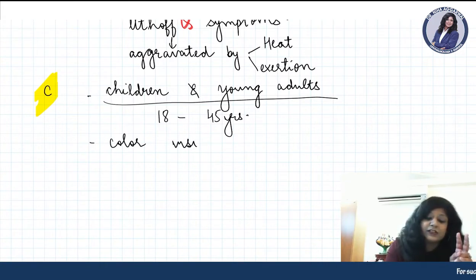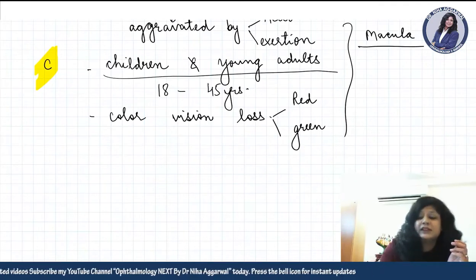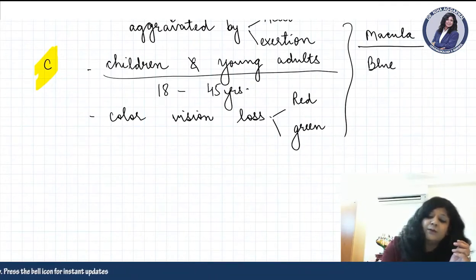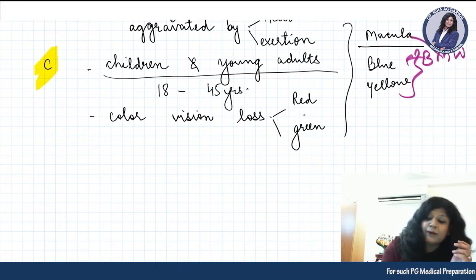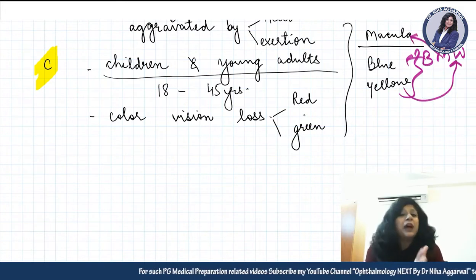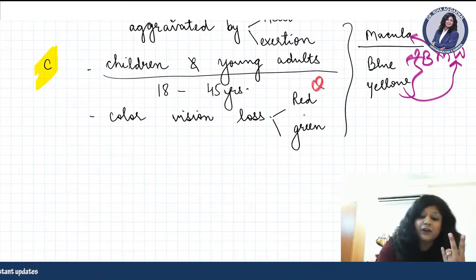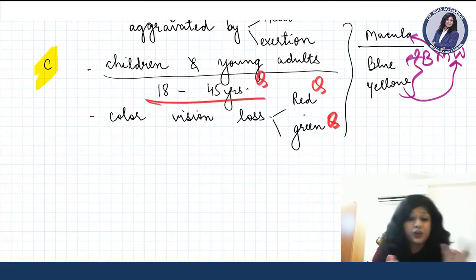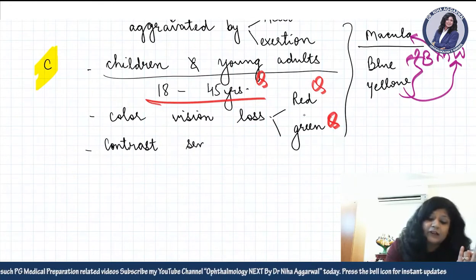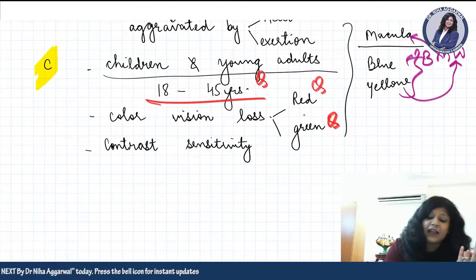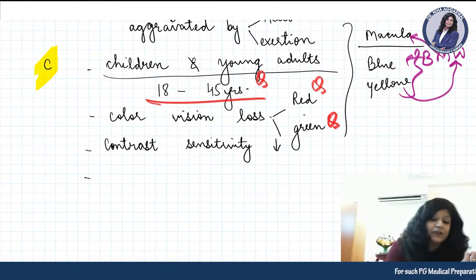The second C is for color vision loss, which is very important. In macular diseases, the colors affected are blue and yellow — remember the BMW car: B for blue, M for macula, W for yellow. If it's an optic nerve disease, the more commonly affected colors are red and green. Color vision is affected, vision is affected, and contrast sensitivity is also decreased.